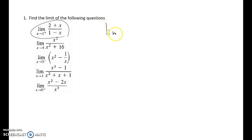Limit x move to one positive side, 2 plus x over 1 minus x here. As you know, if you plug one into this function, this will be undefined because the denominator becomes zero.